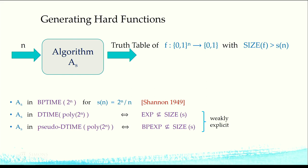It's easy to construct something like that by sampling things at random — you can get a probabilistic algorithm that just samples a random string and outputs it, and by Shannon's counting argument that will work with high probability because most functions are hard. What is much less trivial, and in fact is not known, is how to make this more constructive. The existence of such an algorithm which computes a truth table of a hard function in time polynomial in the size of the truth table is essentially equivalent to E not being in size s.